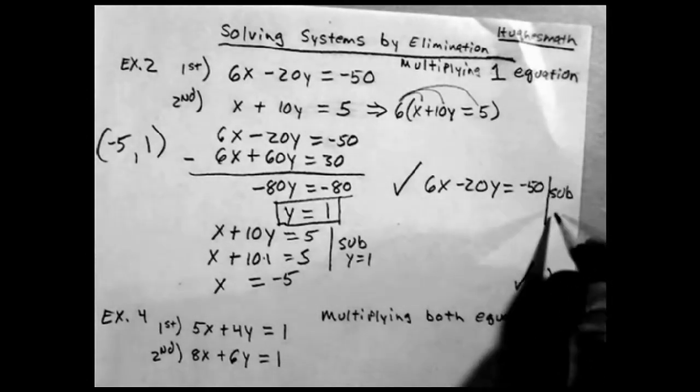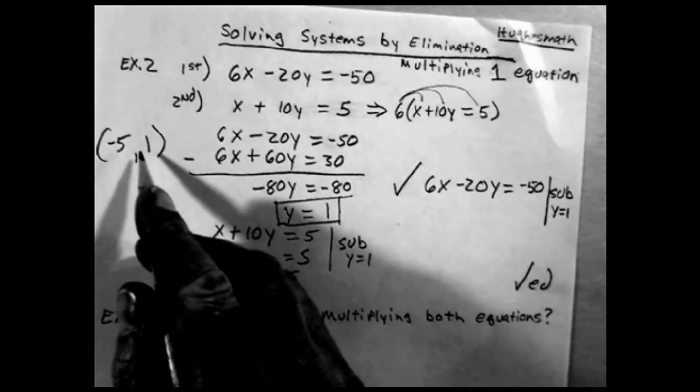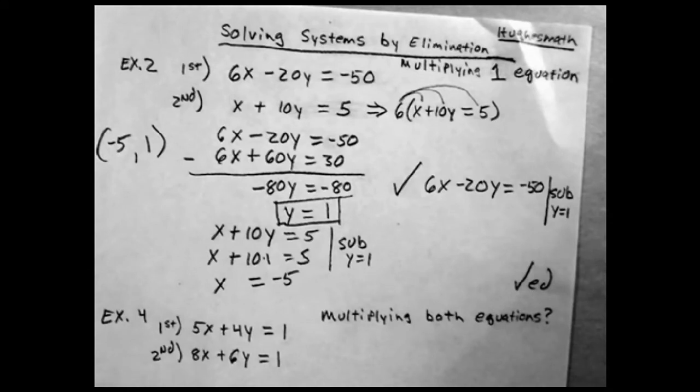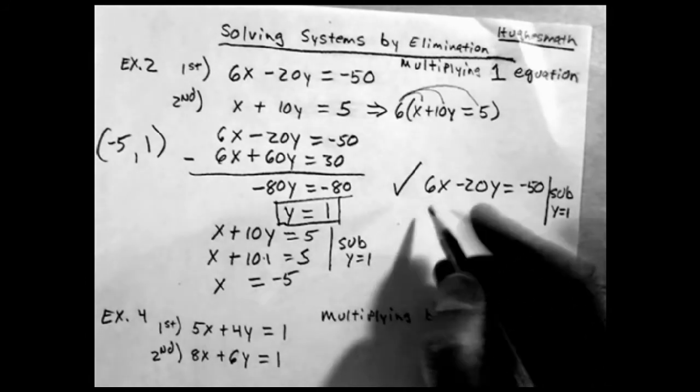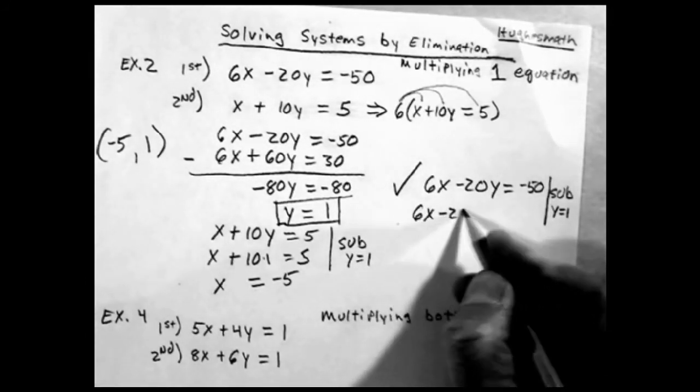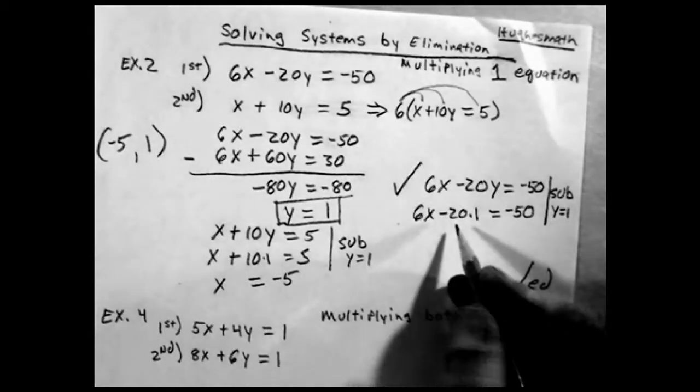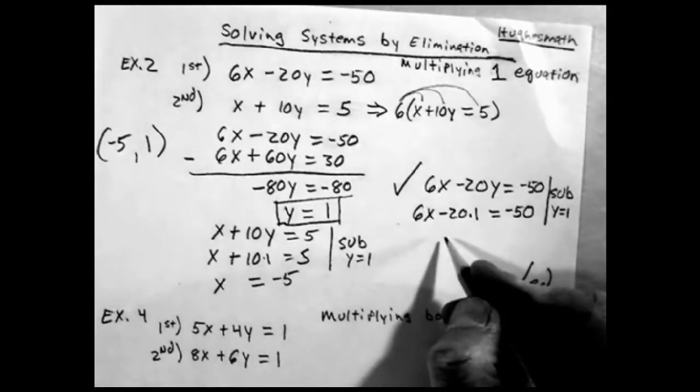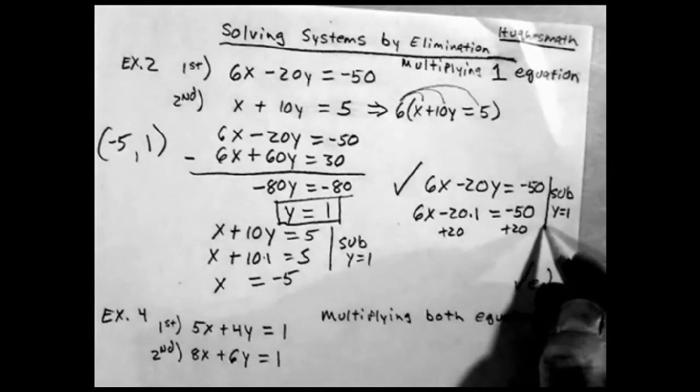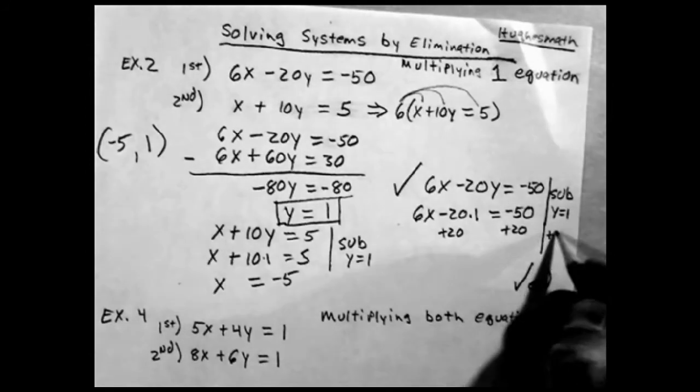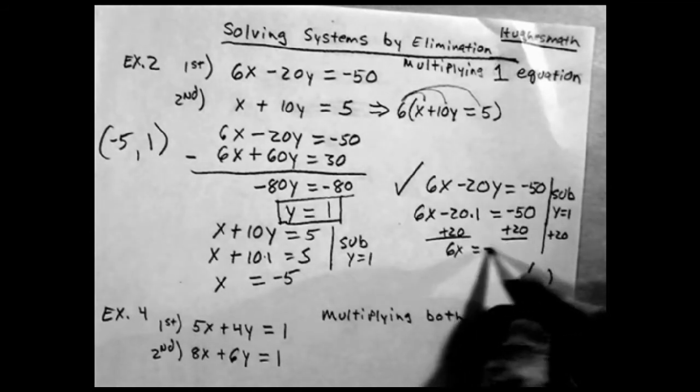Sub again, y equals 1. If I get the same x, that means that's the intersection point because that's the point where it works for both of them, both equations. Sub again, minus 20, but I'm going to add it to that side, plus 20 to both sides.